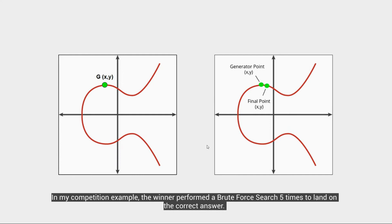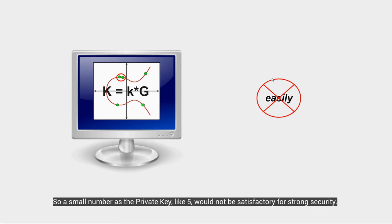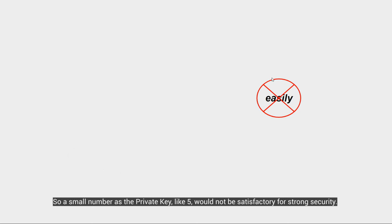In our example, where you just won the money, you performed a brute force search five times to arrive at the final point. Now, obviously, a computer would be able to easily perform five brute force searches to arrive at the final point in our example. But a trapdoor function relies on brute force searches being feasibly impossible in technology's current state. So a private key using a small number like four or five wouldn't be satisfactory in the least bit.